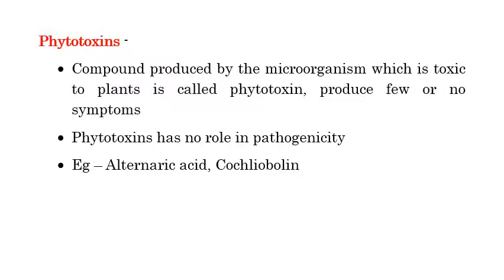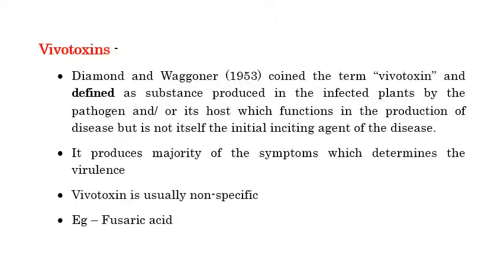The first category is phytotoxins. These are compounds produced by microorganisms that are toxic to plants — 'phyto' meaning plant and 'toxin' meaning poison. Phytotoxins produce few or almost no symptoms and have no major role in pathogenicity. Examples include alternariol and cochliobolin.